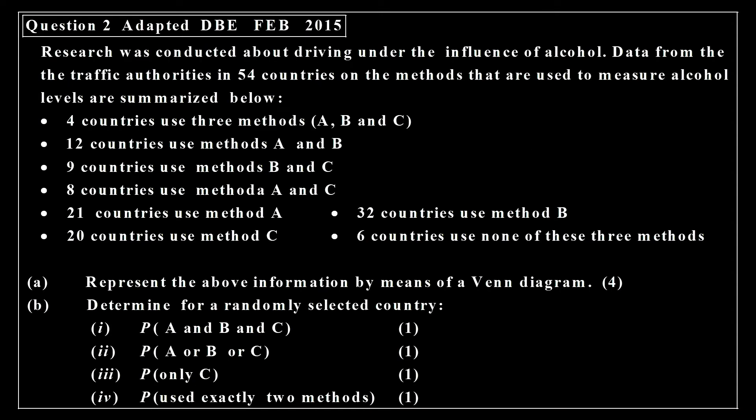Now let's look at our second question here. This is a question that was adapted from the February 2015 paper. This is a question where we have to draw a Venn diagram. And then we have four probability questions based on the Venn diagram. The first question we have to represent a Venn diagram. And there's the representation of the Venn diagram based on the given information.